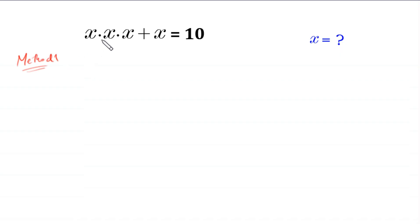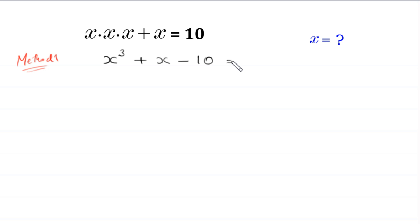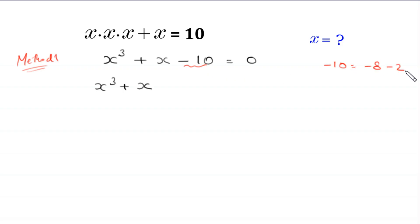This x times x times x will become x cubed, plus this x, and we move this 10 to the left side. This becomes negative 10 is equal to 0. So we have x cubed plus x minus 10 is equal to 0.